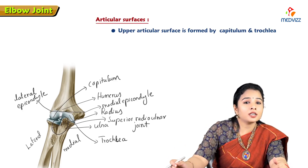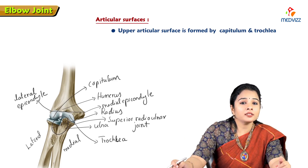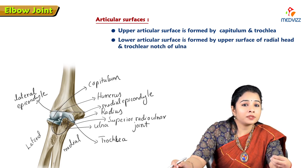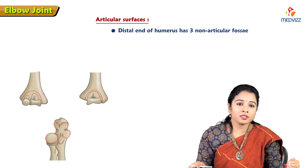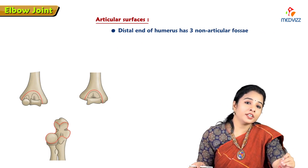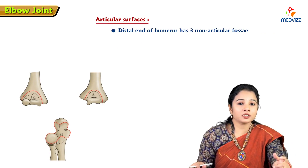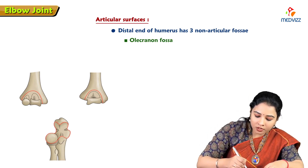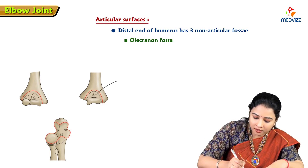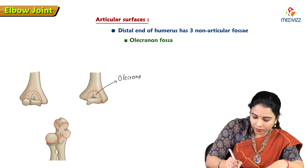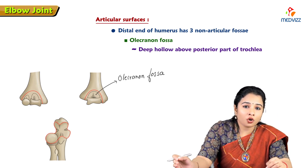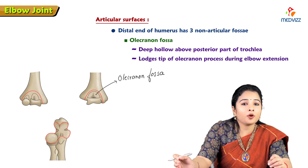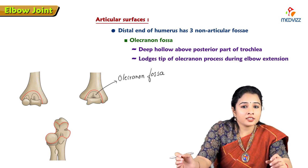The upper articular surface is formed by the capitulum and trochlea of the lower end of the humerus. The lower articular surface is formed by the upper surface of the head of the radius and the trochlear notch of the ulna. The distal end of the humerus has three non-articular fossae. The first is the olecranon fossa, a deep hollow seen on the posterior view of the lower end of the humerus, situated above the posterior part of the trochlea.